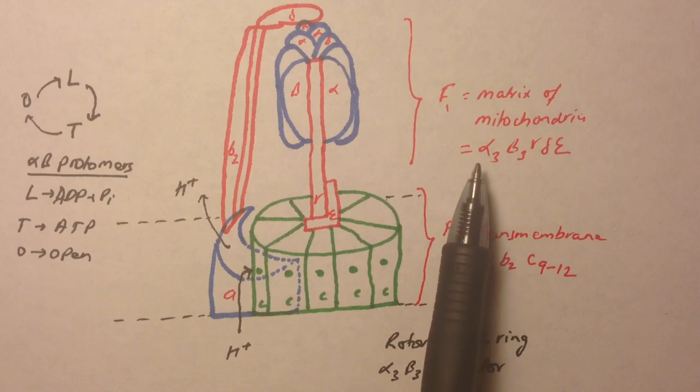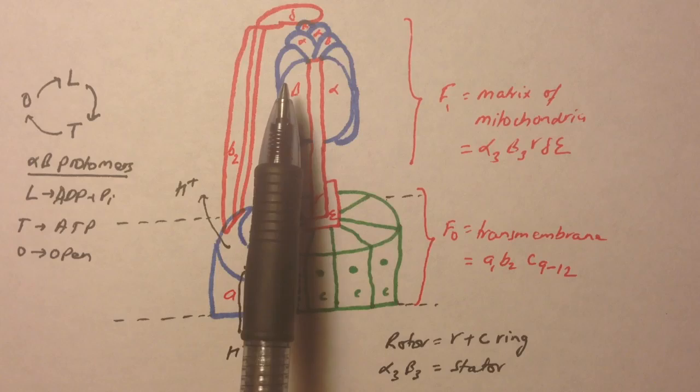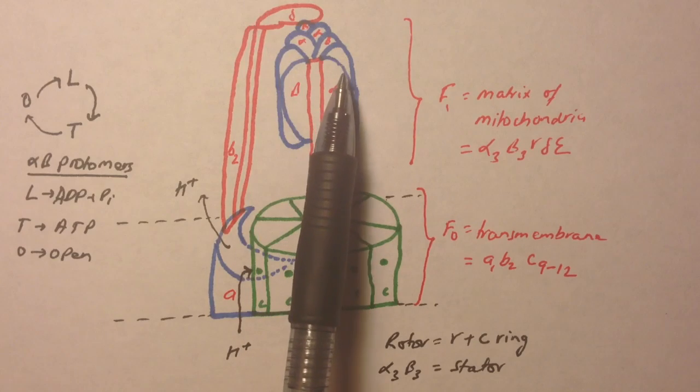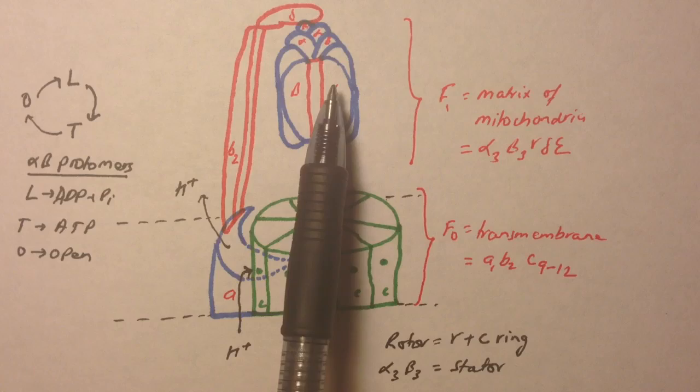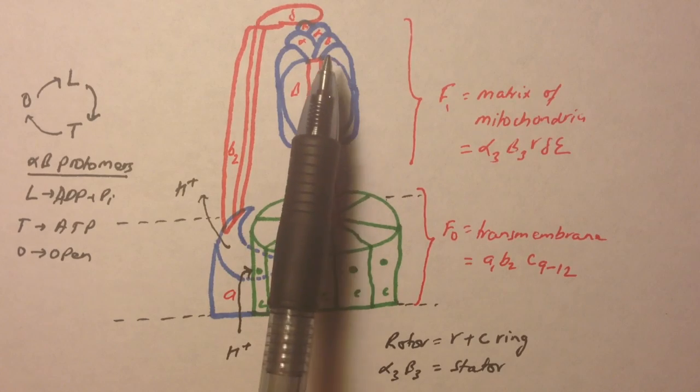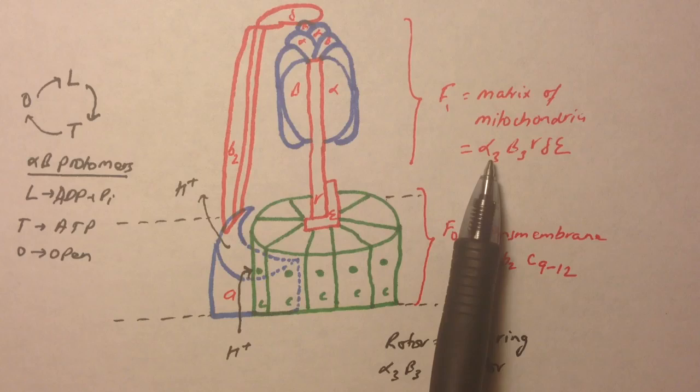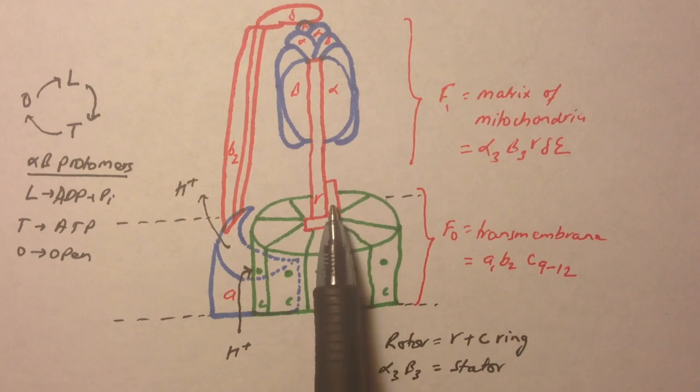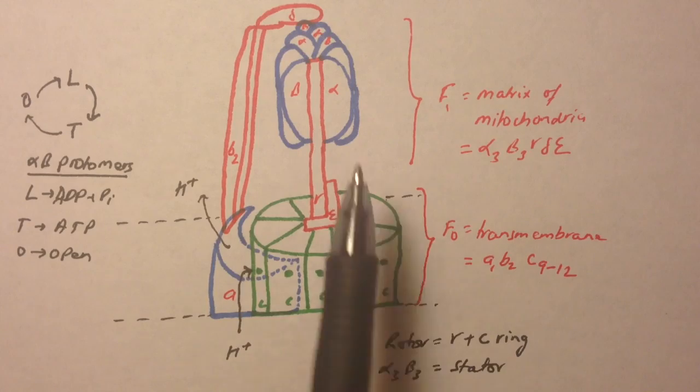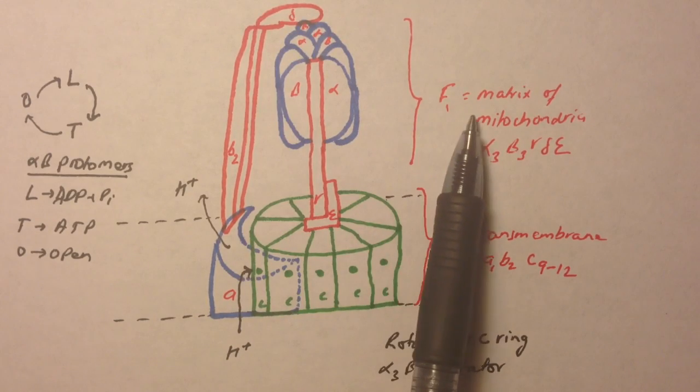F1 contains alpha3, beta3, gamma, delta, epsilon. All these blue structures are alpha and beta, and they are organized one after another. So you have alpha, beta, alpha, beta, alpha, beta - six total, three alpha and three beta. Gamma is this part, epsilon is this one, and delta is this one. This makes up the F1.